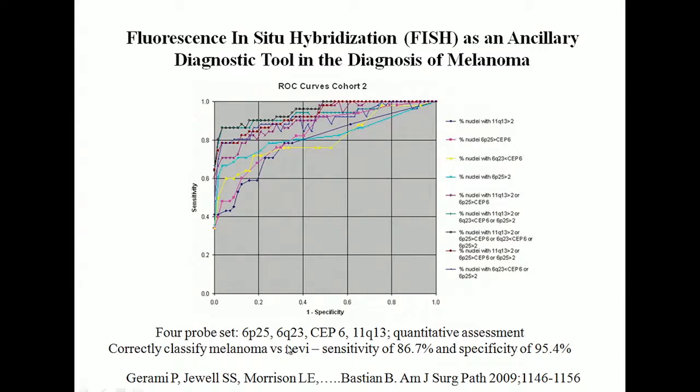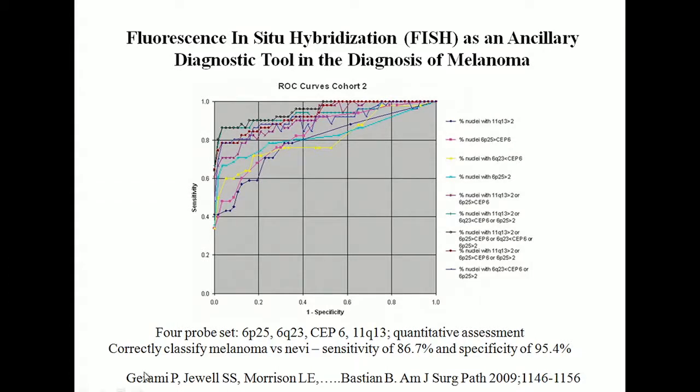The four-probe set covered FISH for 6P25, 6Q23, CEP6 — that's the chromosome enumeration probe, meaning the centromere probe so you can confirm you have chromosome 6, which doesn't say anything about the genes under it — and 11Q23. An important point was that histology is subjective; two different people can look at the same case and have different opinions. But when quantifying FISH probes, it's a quantitative assessment that can be standardized. This test correctly classified their melanoma set versus nevi with a sensitivity of 87% and a specificity of 95%, and they thought it was a good test for difficult melanocytic lesions.